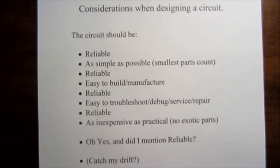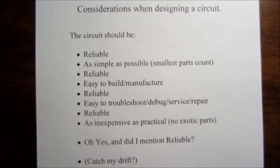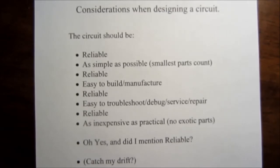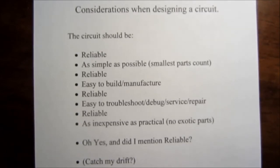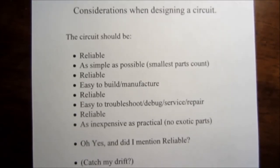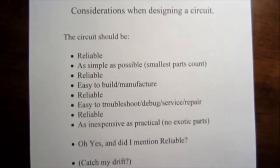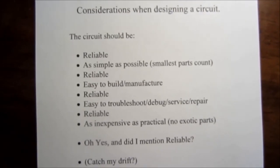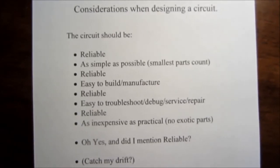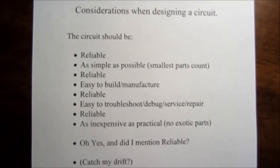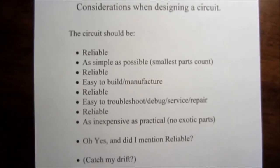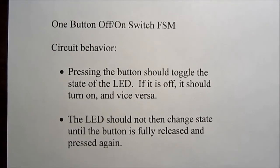All right, let's just end with a list of things we might consider when we're designing a circuit. The circuit should be reliable. It should be as simple as possible with the smallest number of part counts as possible. But again, it needs to be reliable. It needs to be easy to build and manufacture and reliable. It needs to be easy to troubleshoot, debug, service, and repair, and also reliable. It should be inexpensive as practical with no exotic parts. So even if you get your parts countdown, you have a simple circuit with a small number of parts. If it's difficult to find those parts or if they're proprietary or at the end of life cycle or something like that, that's not very good. So you need to be made out of things other than unobtainium. And, oh yes, did I mention it should be reliable?